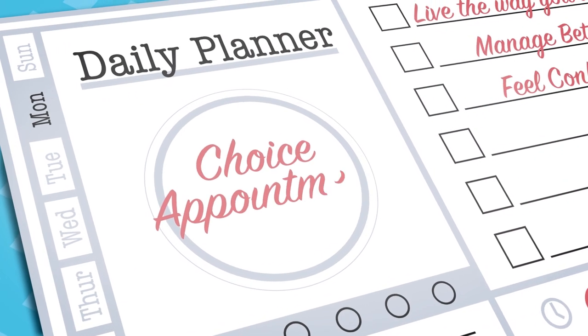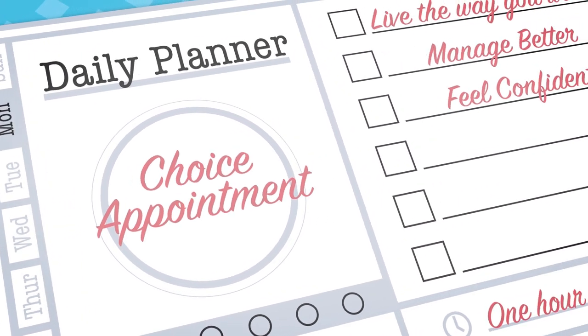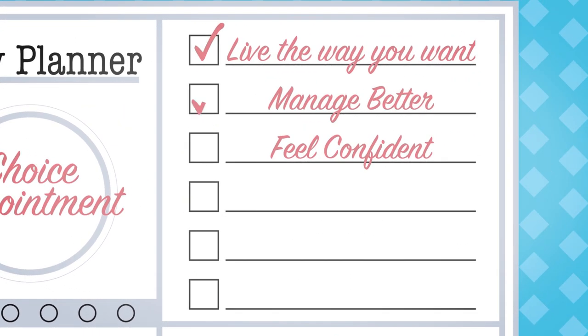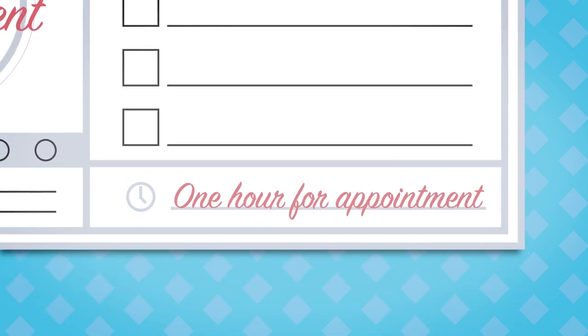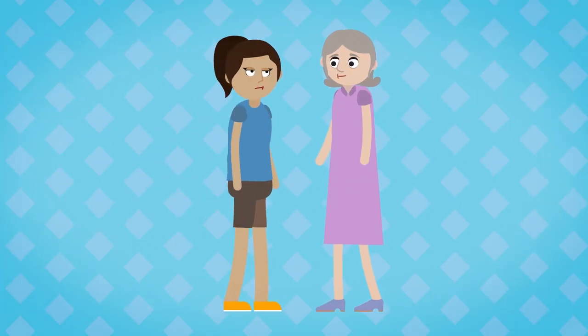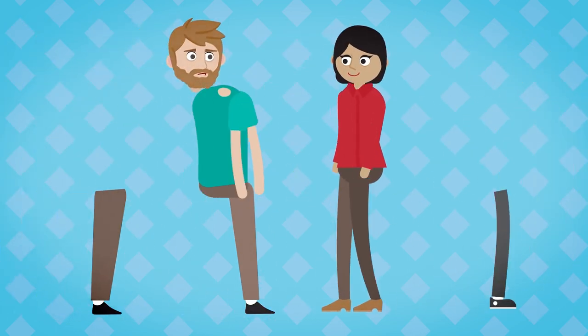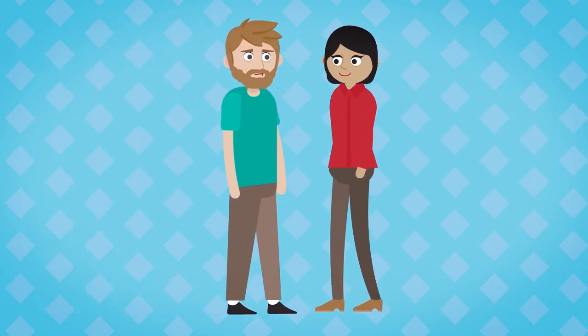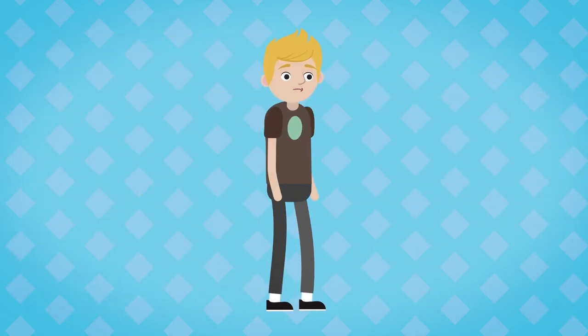A choice appointment is a step you can take to help you live the life you want to live. It can help you manage better and feel confident when you need to deal with something tough. The appointment is usually an hour long. Since we know that mental health isn't just about one person, it's helpful to bring a family member or someone who knows you well to your appointment. It's also okay to come alone.